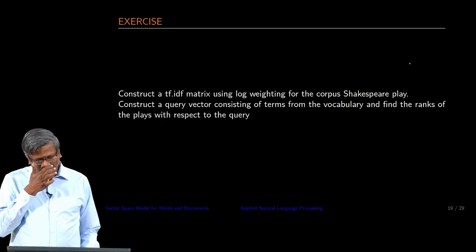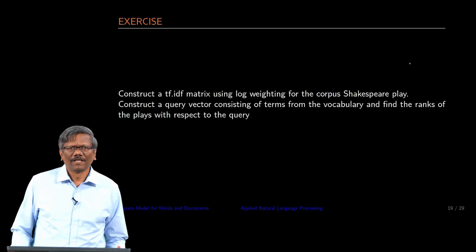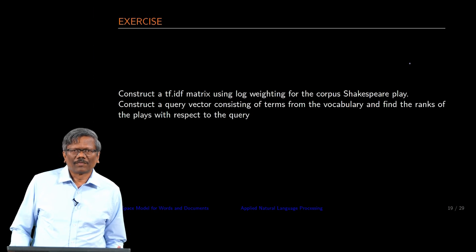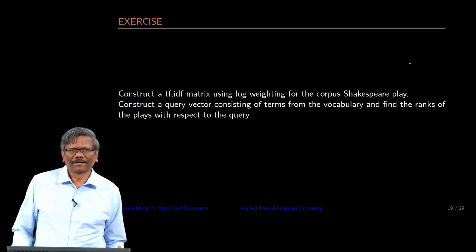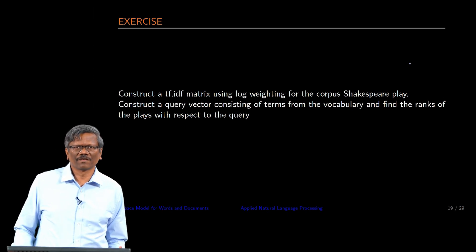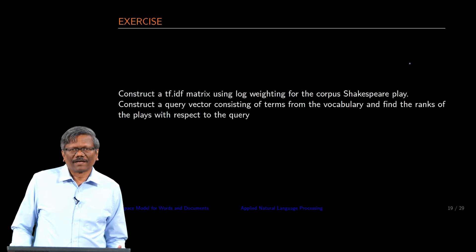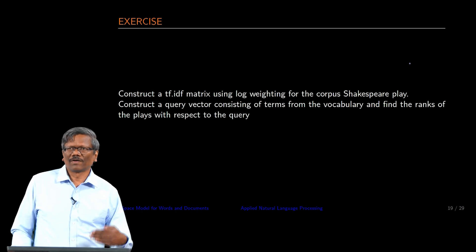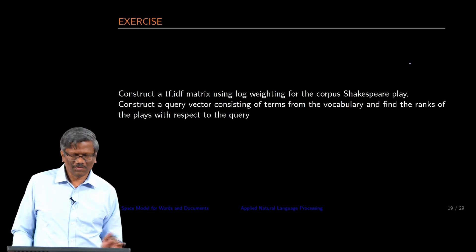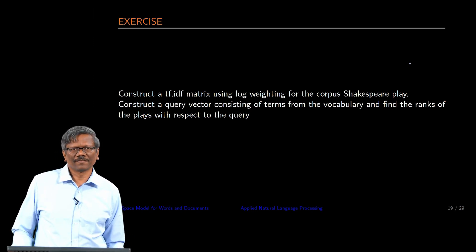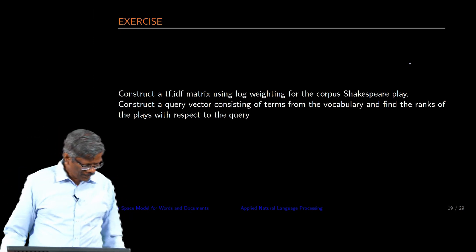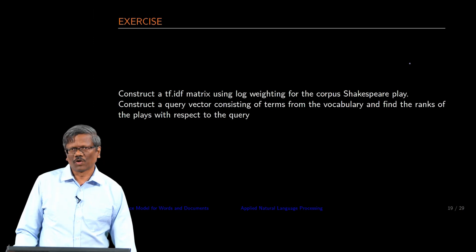The exercise is to construct a TF-IDF matrix using log weighting for the corpus of Shakespeare's plays. You need to construct a query vector containing some terms — pick a few terms at random from a play and construct it as a vector. Then use the cosine similarity shown in the demo to find out how those plays are ranked with respect to that query. The program is already available; what you have to change is only the document-term matrix, replacing it with Shakespeare's plays data.